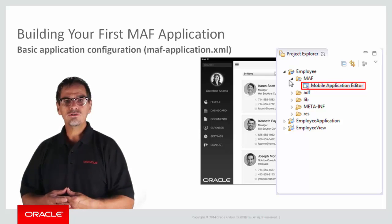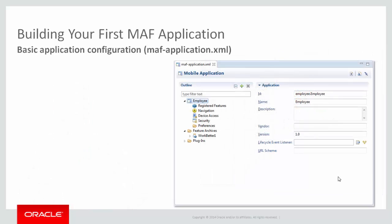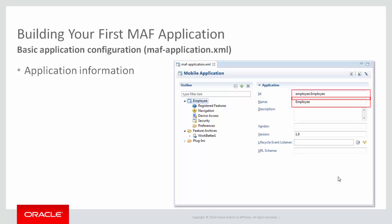The purpose of the maf-application.xml file is to define application-level configuration information. Let's take a look in a little more detail about what kind of information you can define. Firstly, there is general information about the application. Here you can define the name of the application as it appears on your device. You can also define a unique ID in the form of a reverse package name. This helps prevent any naming collision and ensures that an application called, for example, 'employee' is unique within your organization or unique across any organization which may also develop a similarly named application.